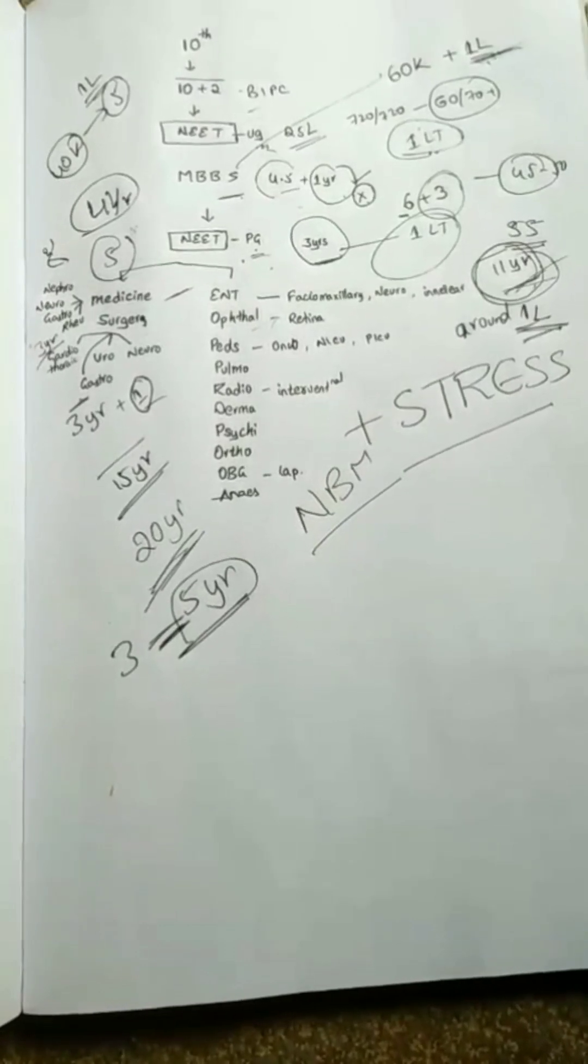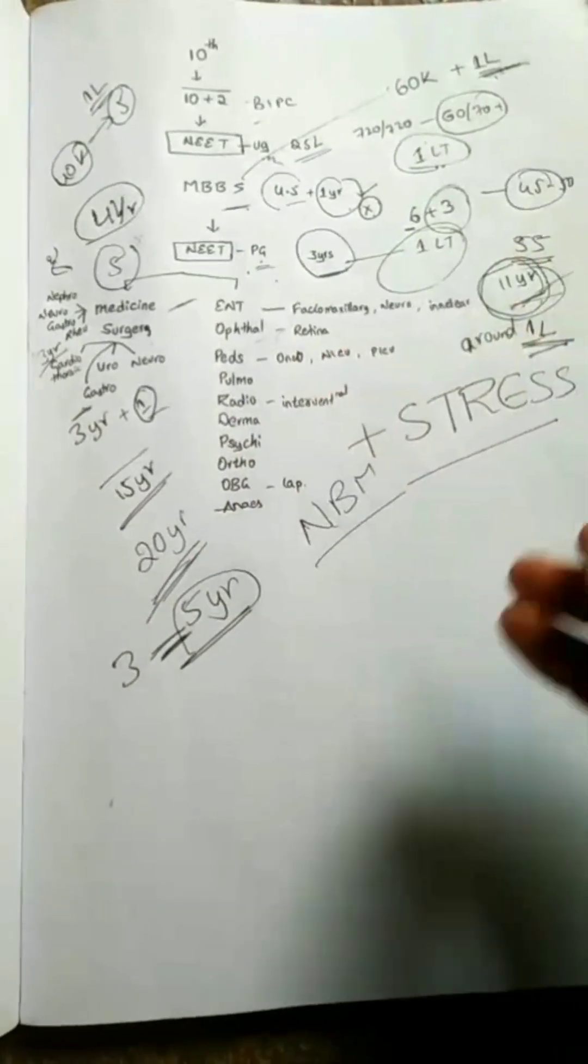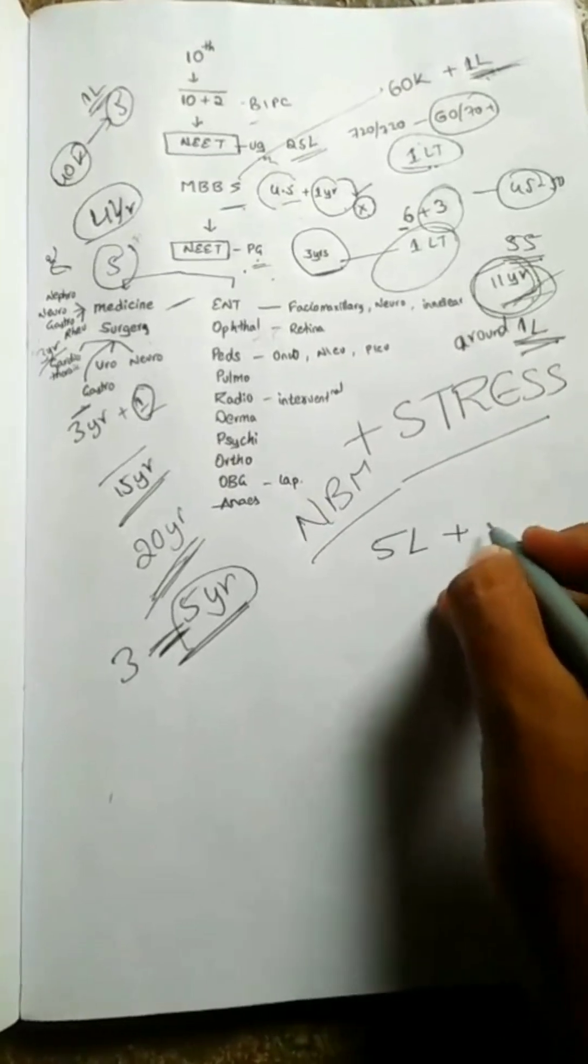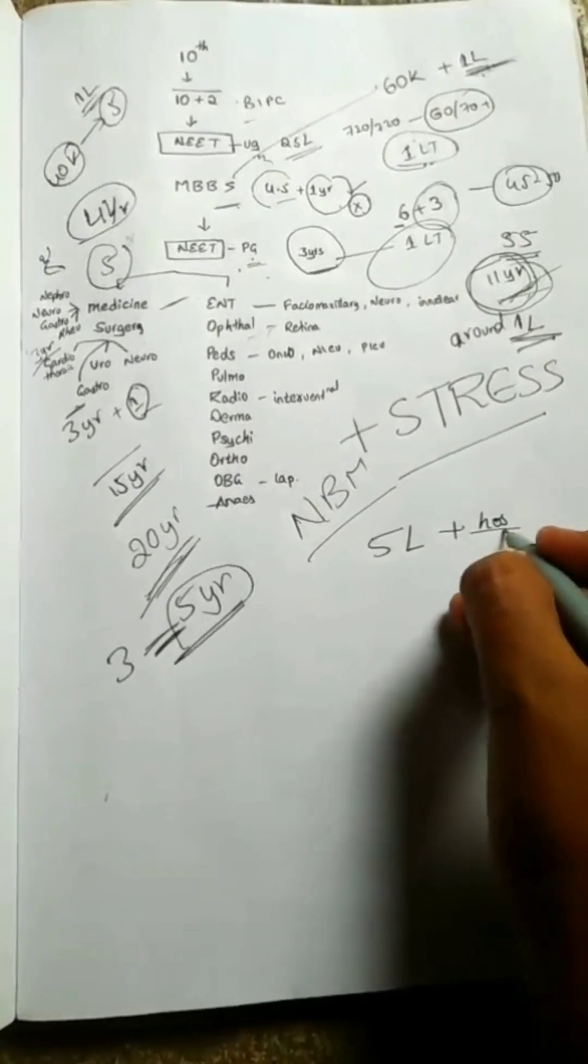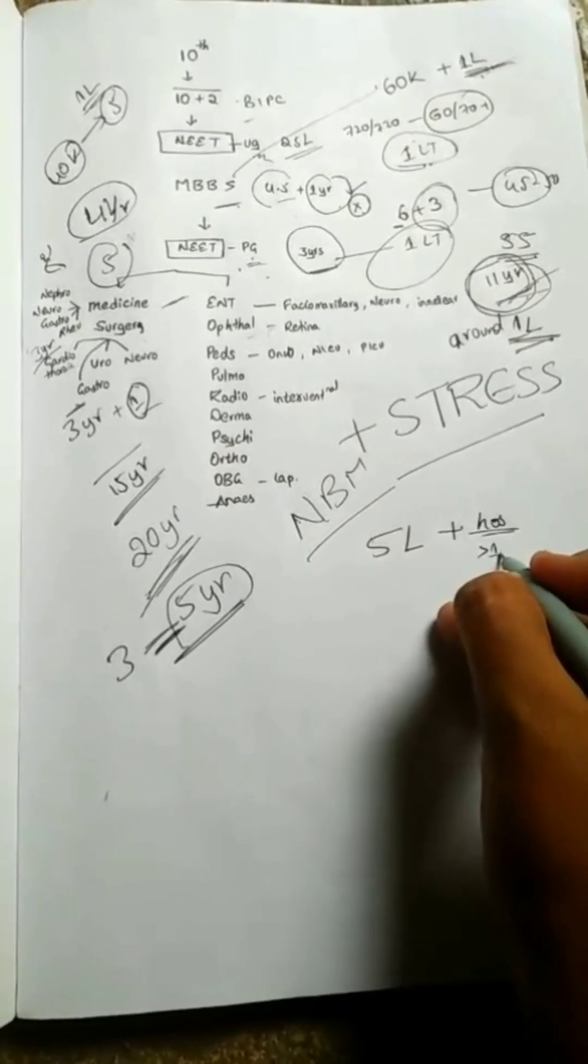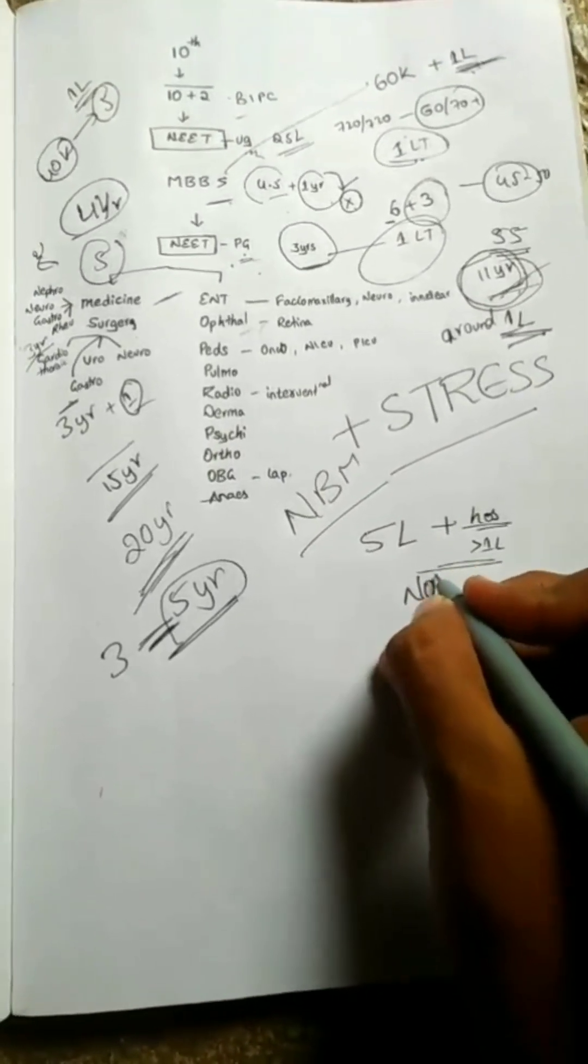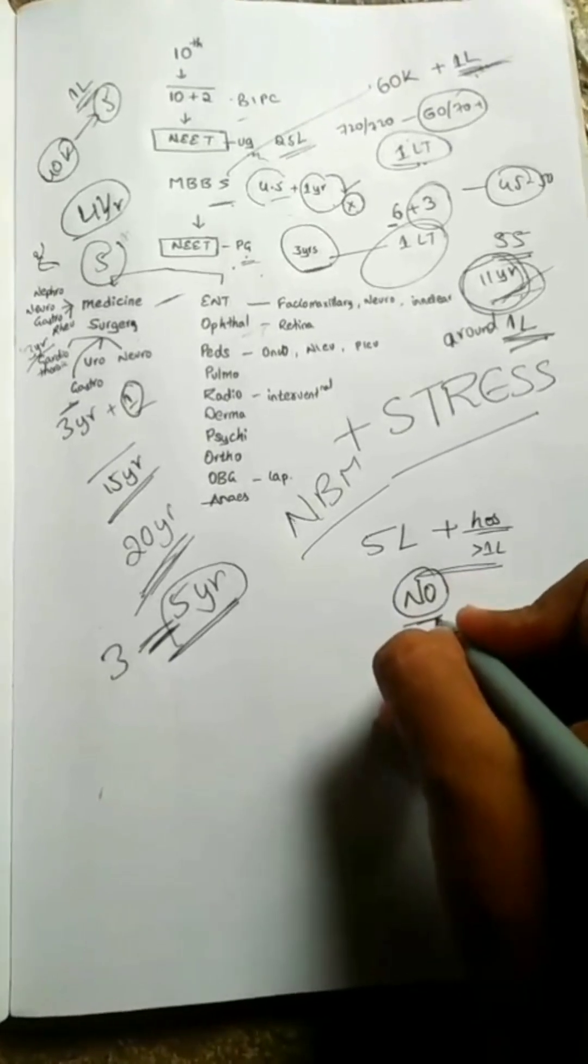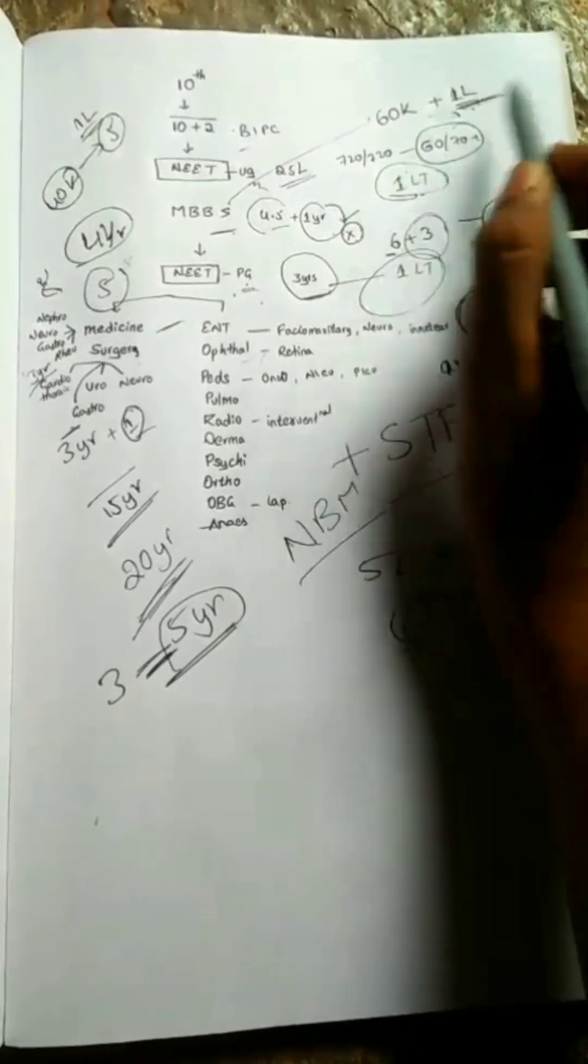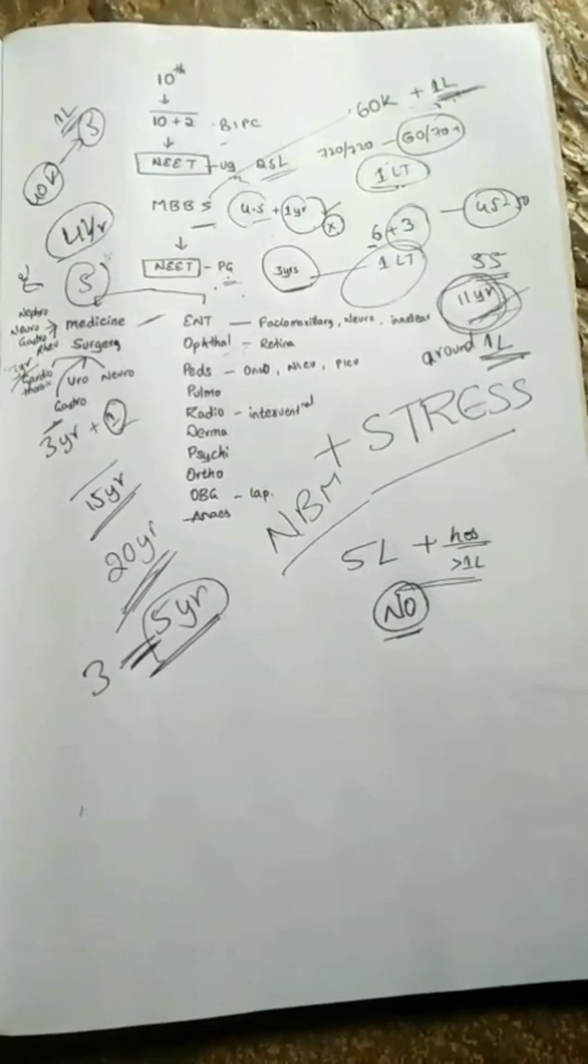Coming to PG, for government okay, but for private the college fee will be around 5 lakhs plus hostel. Hostel is mandatory, so it will be again above 1 lakh with no stipend. No salary will be given here also, and during internship no salary will be given. Based on these calculations, choose wisely.